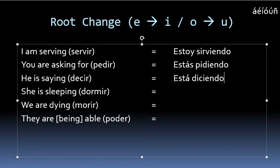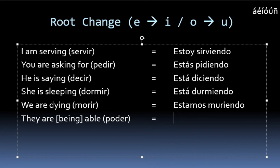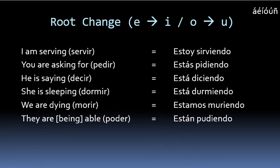There are also situations for ER and IR verbs where we have to change the O to a U sound to maintain the flow of speaking. For example, 'she is sleeping' would be translated as está durmiendo. For 'we are dying,' nosotros estamos muriendo. And 'they are able' would be están pudiendo. So those were our three cases of changing that O to a U.